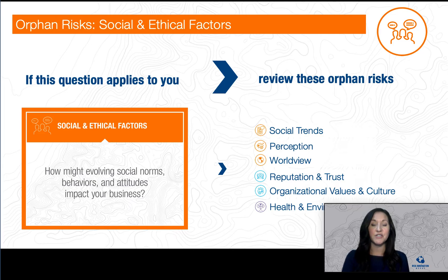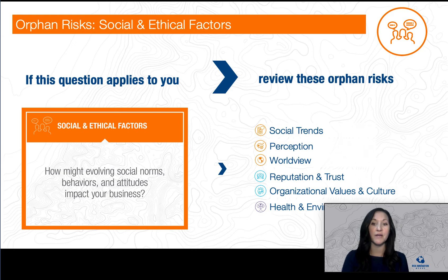For each question, we have listed multiple associated orphan risks. While they may not all be applicable to you, we encourage you to consider how multiple risks might work in conjunction to pose a multifaceted threat to your organization or project. Planning for just one of these orphan risks may not be enough to help you navigate forward successfully. So again, we encourage you to make a note of every risk associated with the questions that seem most applicable to your organization or project.